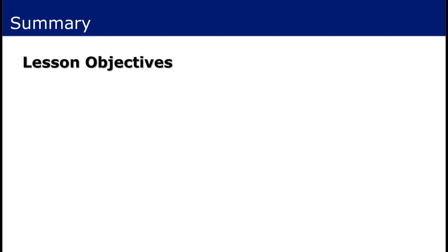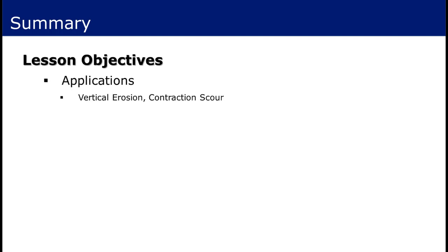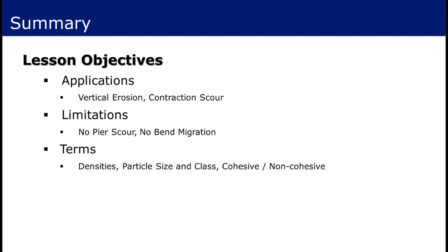This concludes the first video on sediment transport modeling with SRH2D. In this video, we introduced applications of sediment modeling including vertical erosion and contraction scour, and limitations including the inability to predict pier scour and lateral migration at bends. We introduced relevant terms such as solid and bulk density, particle size and class, and cohesive and non-cohesive sediment types. And we described how sediment is transported as different loads and how that affects some of the ways we set up our models.